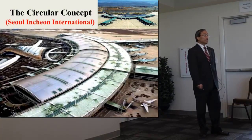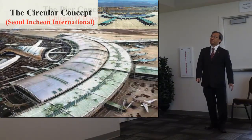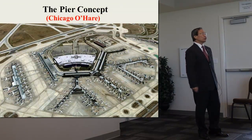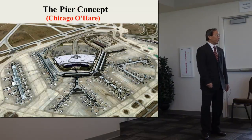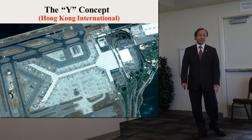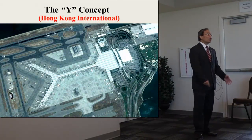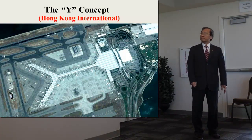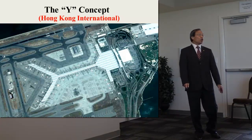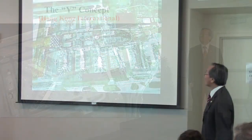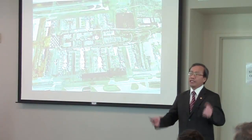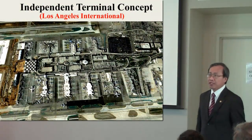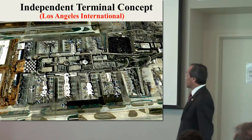The example of the circular concept is Seoul International Airport. The pier concept provides terminal expansion in all directions — Chicago is an example. The wide concept provides an airport's future predictable traffic, with Hong Kong International as an example. The independent terminals are airports where you have dominant base air carriers, like LAX.